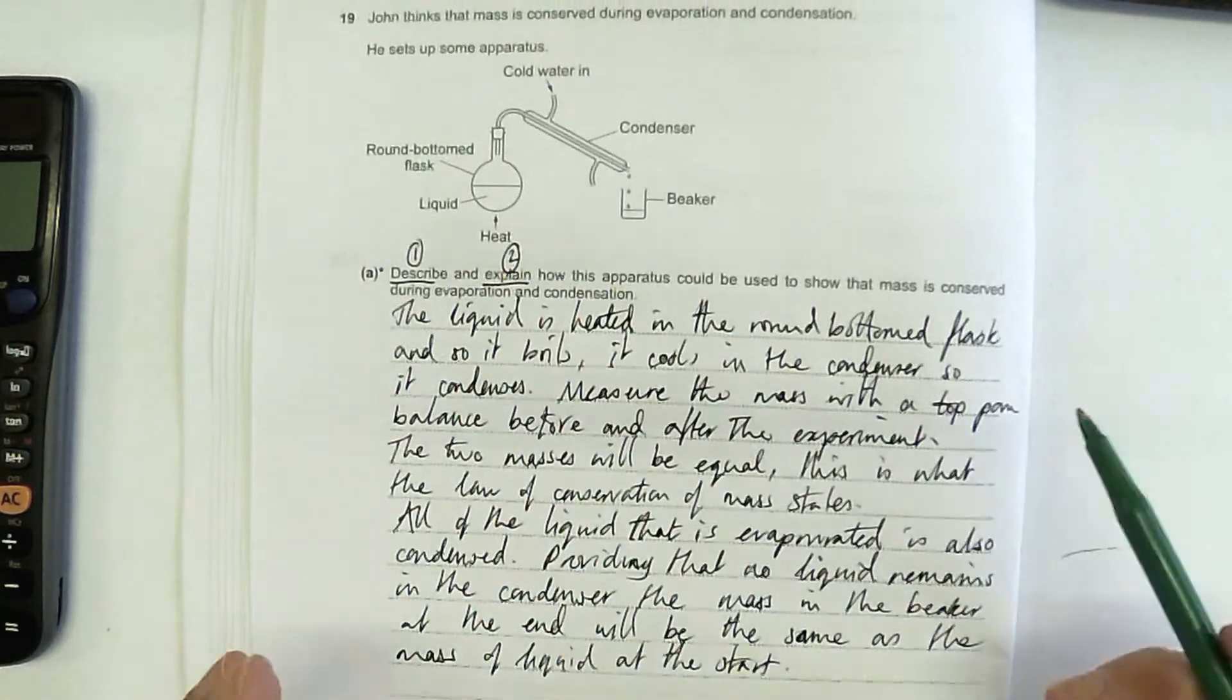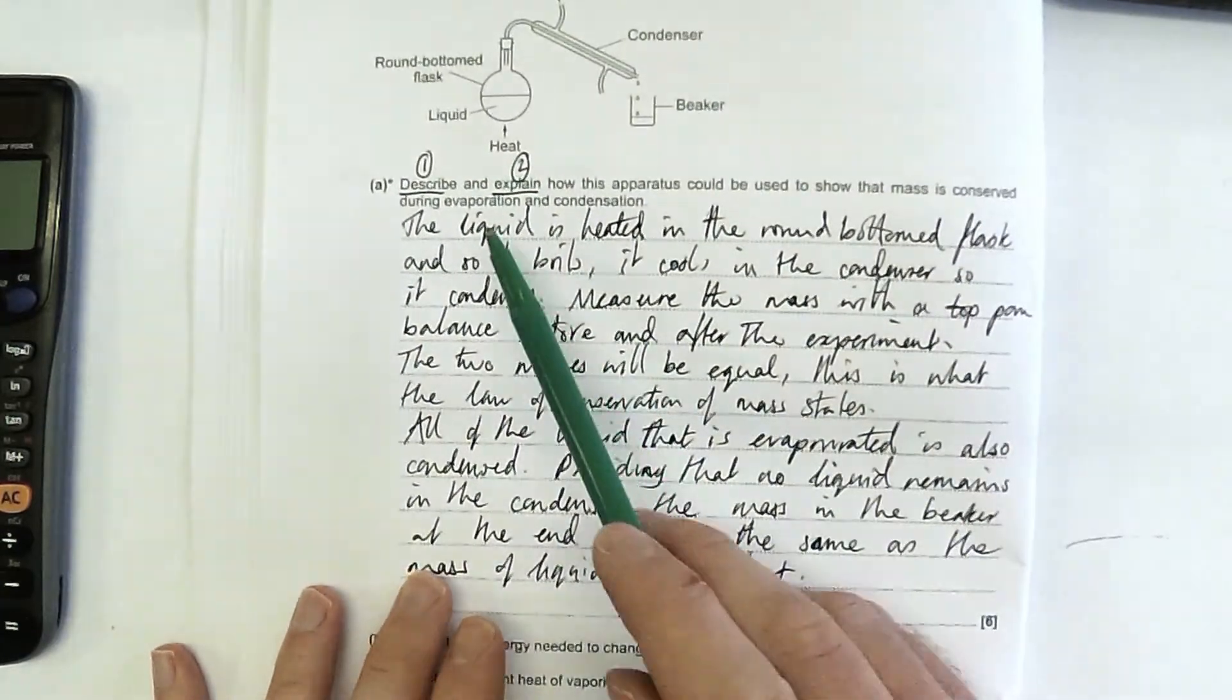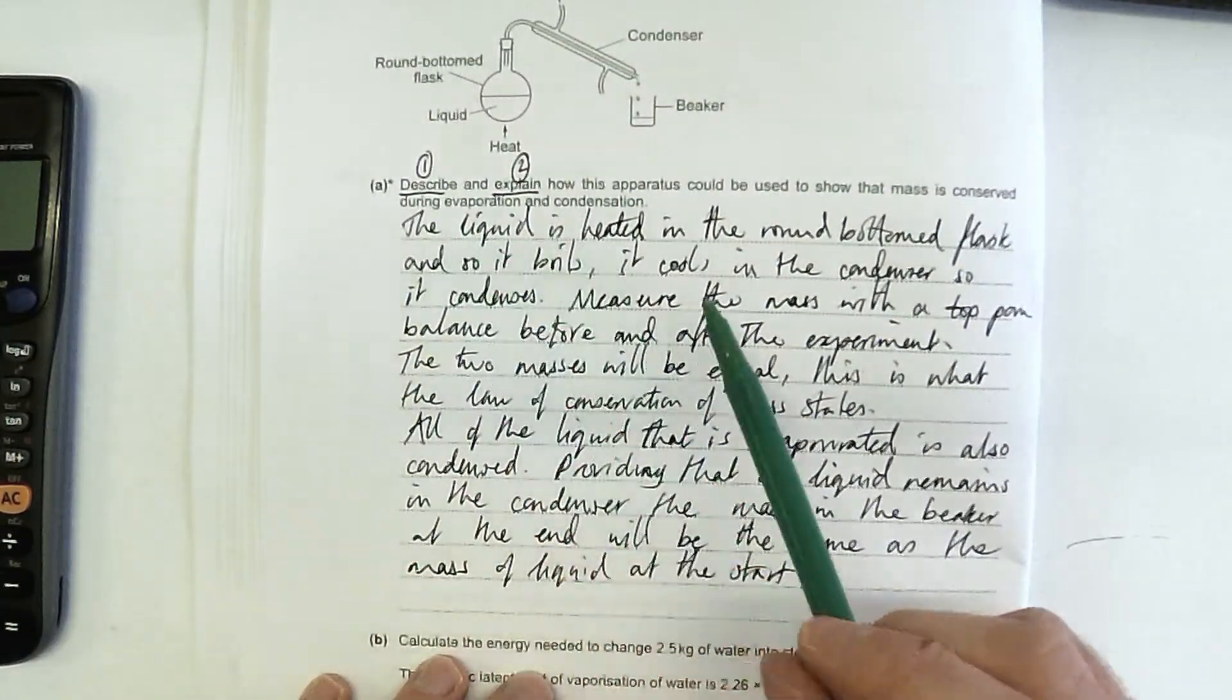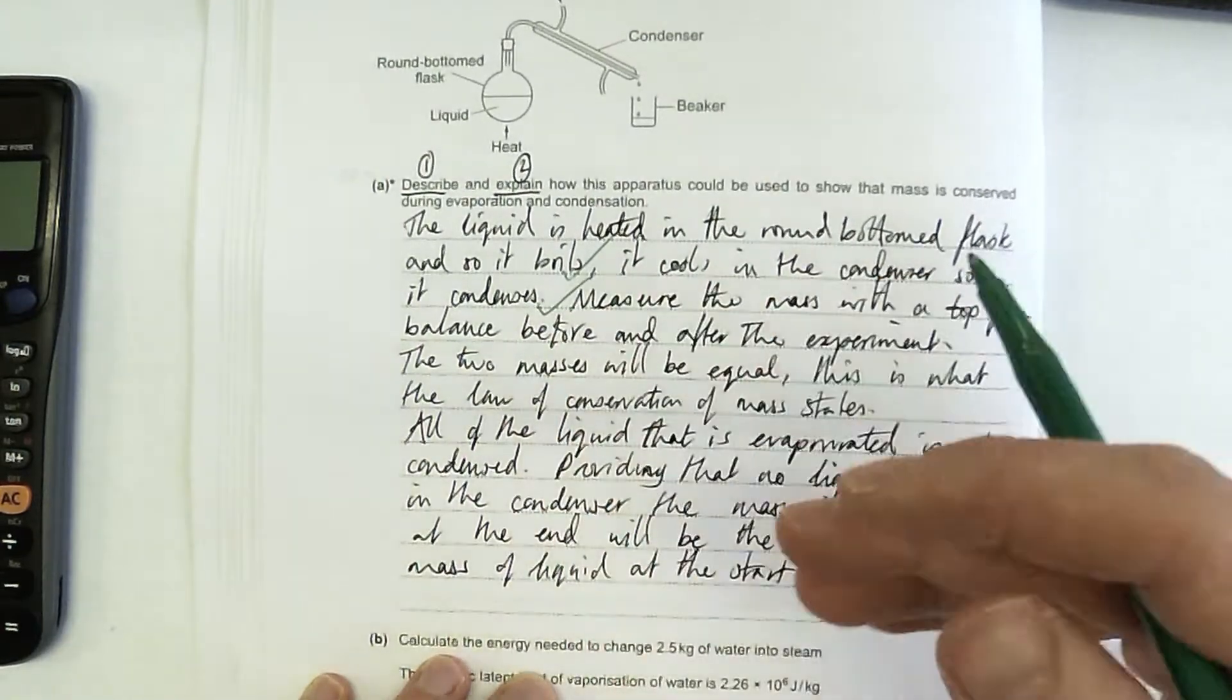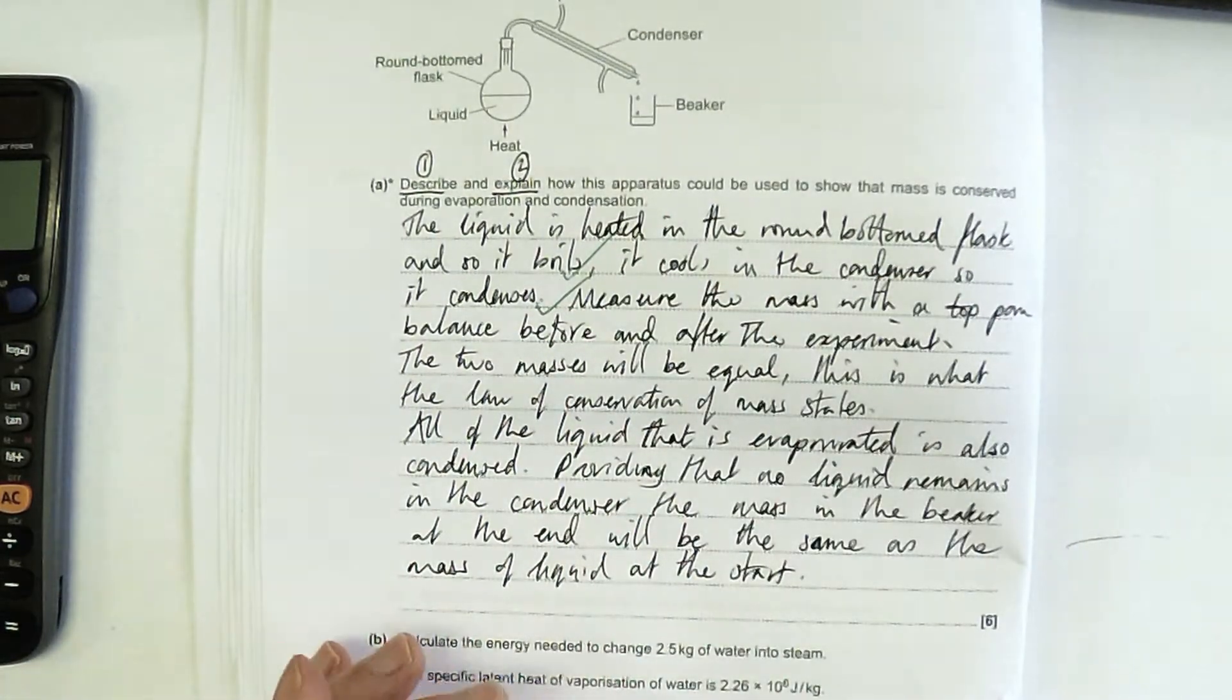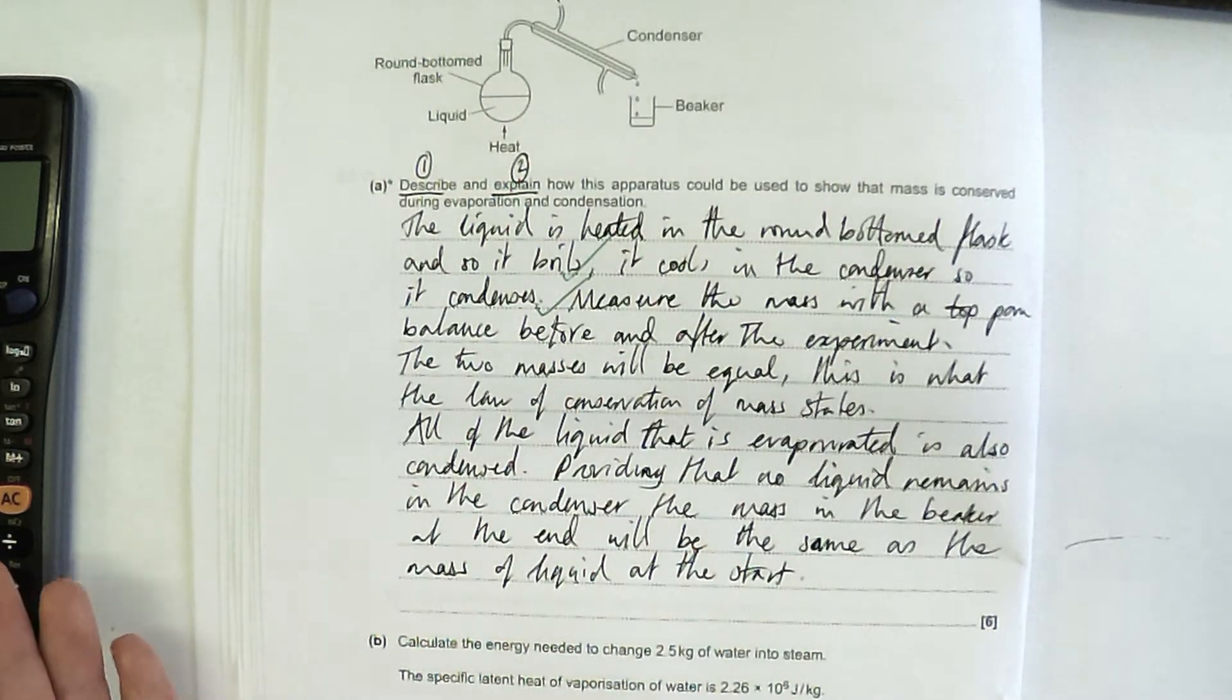Let's reread our answer now, and I'd always encourage you to do that. Did you cover what you planned? Liquid is heated in a round bottom flask and so it boils. It cools in the condenser so it condenses. That's a level one response, two marks. I've described that it boils where it boils and condenses where it condenses.